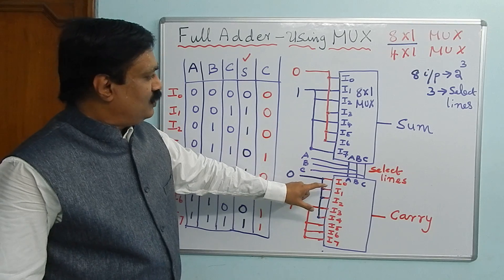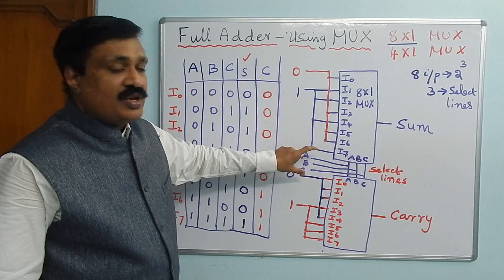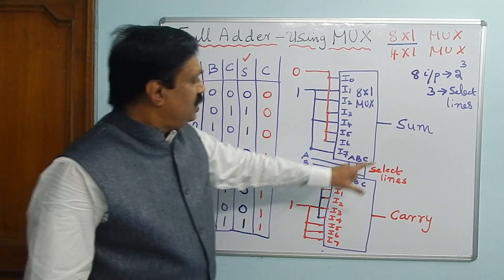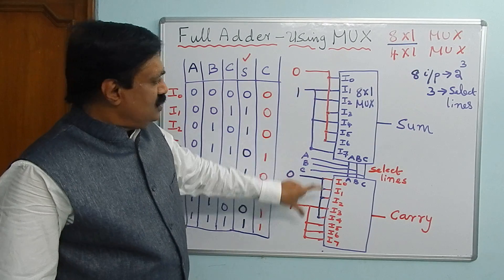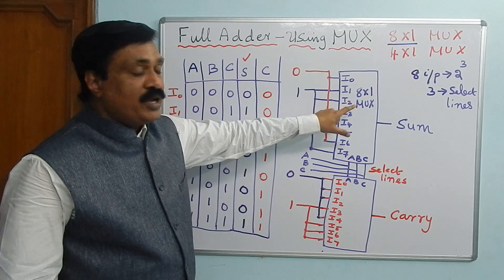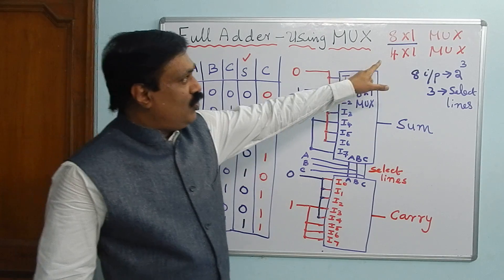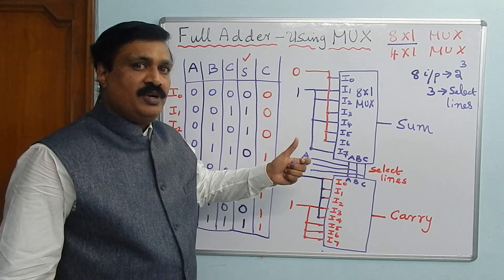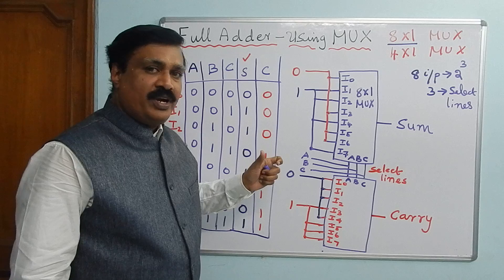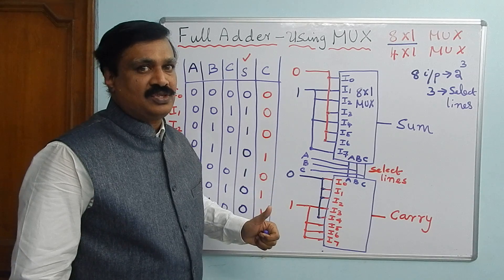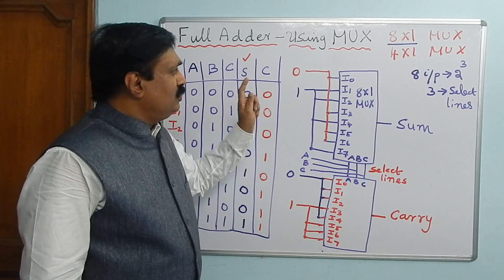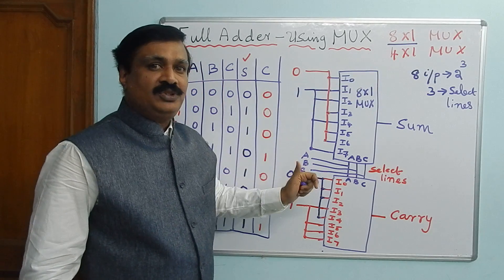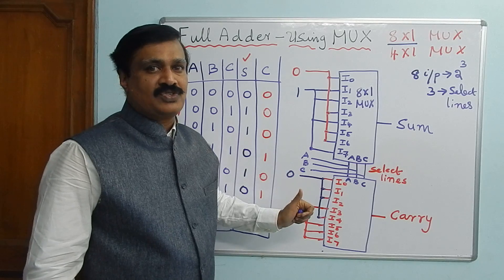Tomorrow we are going to implement the Full Adder using a 4×1 multiplexer instead. The reason we prefer a 4×1 MUX is that it is a simpler circuit with fewer components and therefore lower cost. Thank you — if you have any doubt, please drop a comment below.